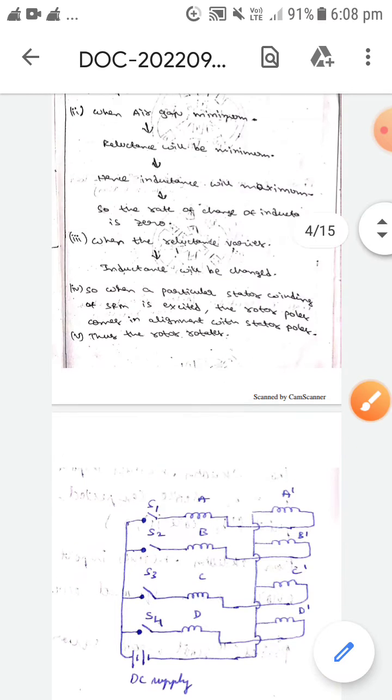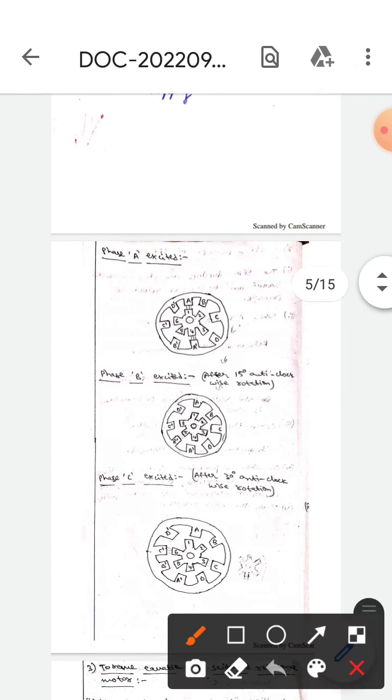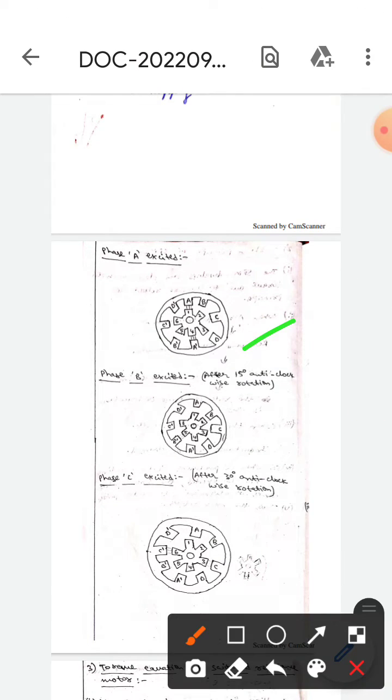If you observe these three diagrams, the first one is diagram for phase A excitation, which means if you observe here, A and one are in same line, and also four and A dash are in the same line. These are all in the same line, so here A will be excited.